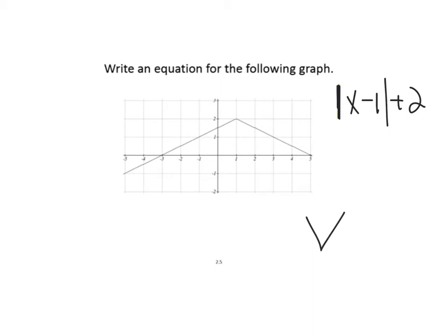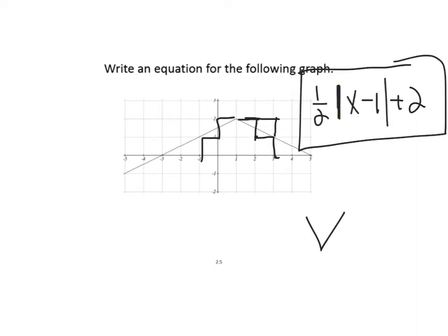It's also been reflected around the x-axis, because normally these open up and this one opens down. Usually with an absolute value function they go over 1, down 1. In this case it goes over 2 and down 1, so that's one half — a vertical compression by one half. And there's that absolute value graph.